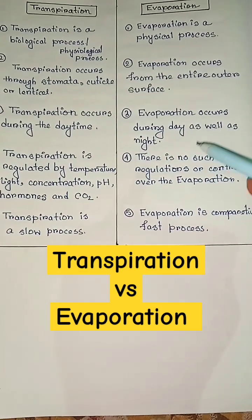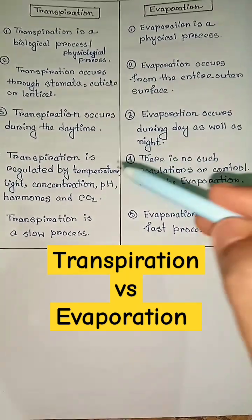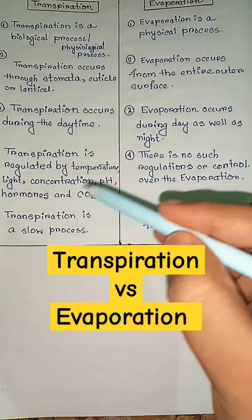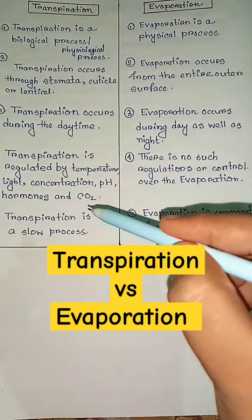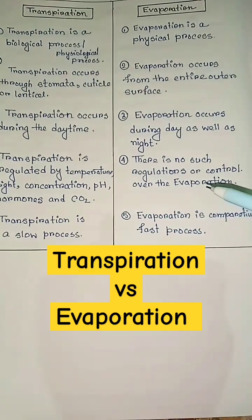Transpiration is regulated by temperature, light, concentration, pH, hormones, and carbon dioxide.